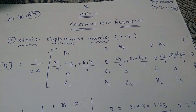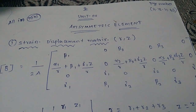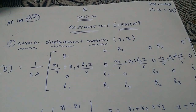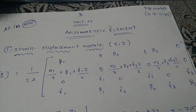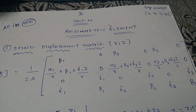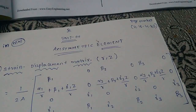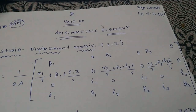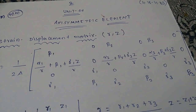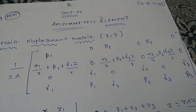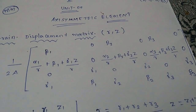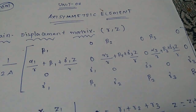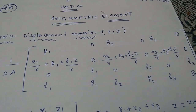We can use the formula. First: b1, beta 1, 0, beta 2, 0, beta 3, 0. Then: alpha1/r plus beta1 plus gamma1/r, zero; alpha2/r plus beta2 plus gamma2/r, zero; alpha3/r plus beta3 plus gamma3/r, zero; then 0, Gamma1, 0, Gamma2, 0, Gamma3.